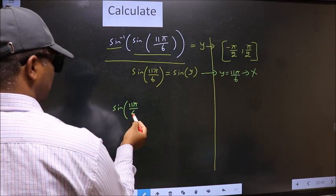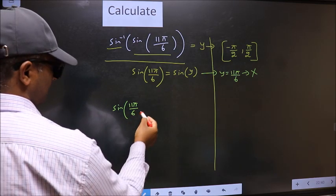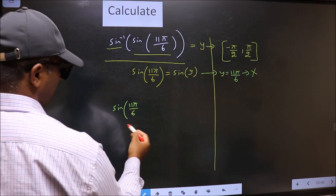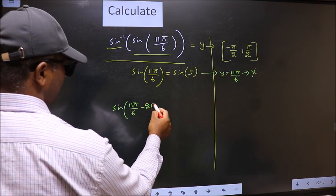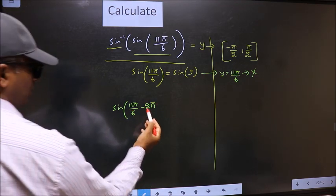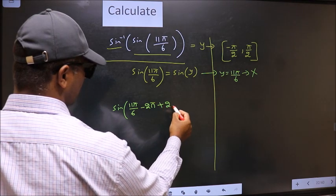11 pi by 6 does not lie in that interval. So we should decrease it. And to decrease we should subtract 2 pi. Whatever we subtracted we should also add the same thing.